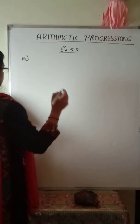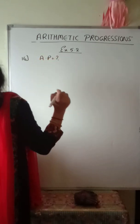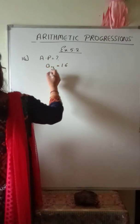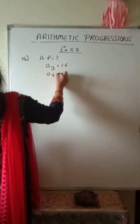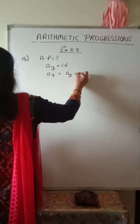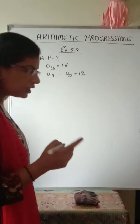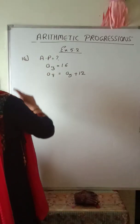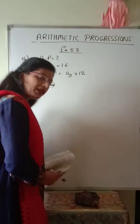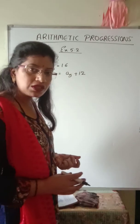Question number 16: Determine an AP whose third term is 16 and the seventh term exceeds the fifth term by 12. So we have to find the AP using these two given conditions.